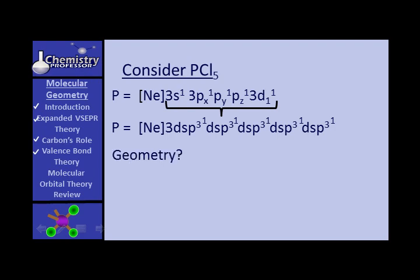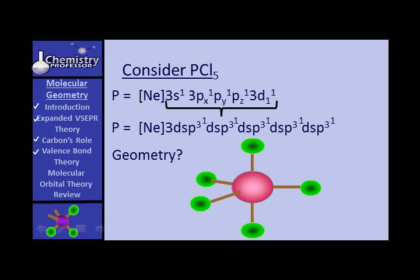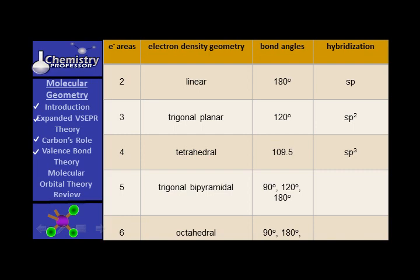What's the geometry? Trigonal bipyramidal — five equivalent positions. The bond is formed by overlap of a DSP3 hybrid of phosphorus with the P from chlorine — that is a sigma bond. When we fill in the table for five areas of electron density with trigonal bipyramidal geometry, DSP3 is the hybrid.